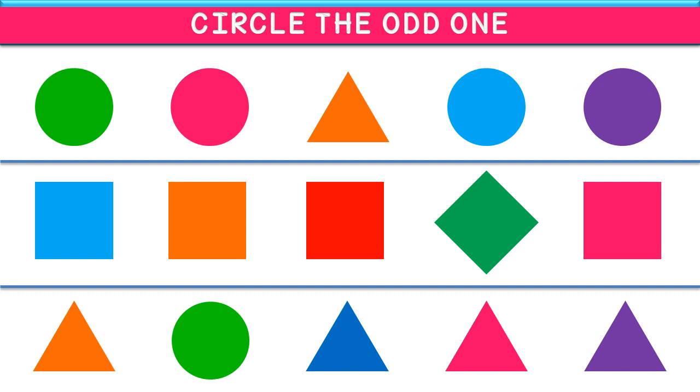Let's start. In first line, we have to find the odd one shape. The first one is a circle, the second one is also a circle, but the third one is a triangle. So, here is the answer. We have to circle the triangle.